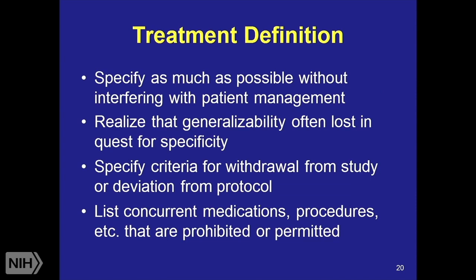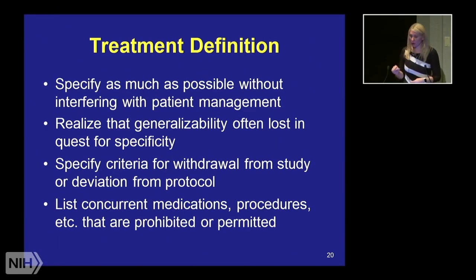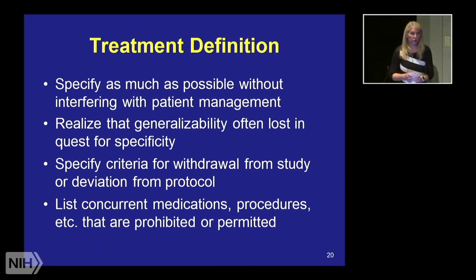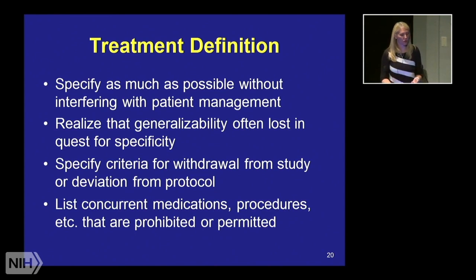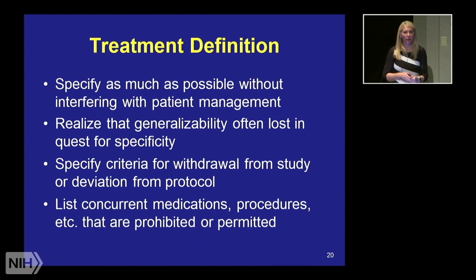You want to define the treatment very clearly. With NIH, we've seen recent publications around enhancing rigor and reproducibility, and part of that is knowing what treatment was actually delivered. We've also seen, in the psychology literature, the push for open science and transparency in publishing a priori hypotheses and protocols. This is a trend so that someone else could attempt to replicate your results.